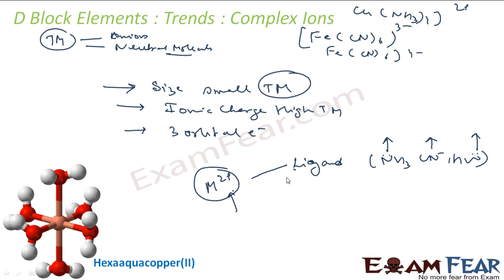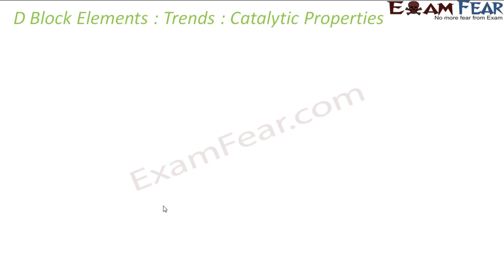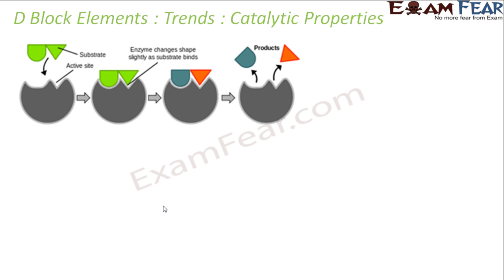Now the next important part of the d block element is the catalytic properties. Catalysts are any substance which accelerates the rate of reaction. This biological catalyst provides a site where the reaction can happen. It forms an intermediate complex, and with this the product is easily formed. The catalyst is not being used but it helps in providing the surface where the reaction can happen, and sometimes the intermediate complex is formed which is easy to break.